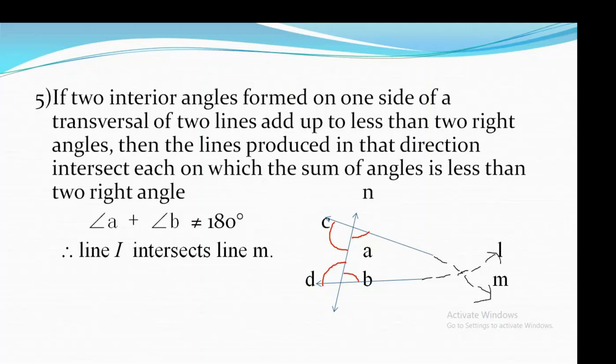On the left-hand side, angle C and angle D on the other side of the transversal have a sum greater than 180 degrees. This is Euclid's fifth postulate. The result is that angle A plus angle B is not equal to 180 degrees; therefore, line L intersects line M because they are not supplementary.